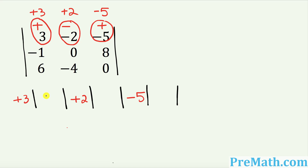These boxes are going to become 2×2 determinants. Let's focus on this positive 3 — I want you to block or hide the column that contains positive 3 and also block the top row that contains positive 3. The unblocked numbers are 0, 8, negative 4, and 0.